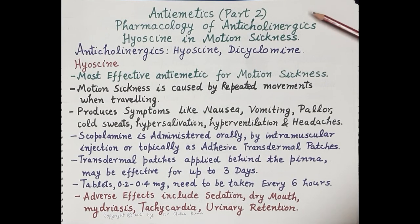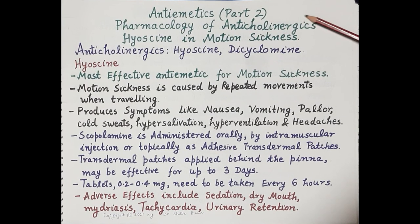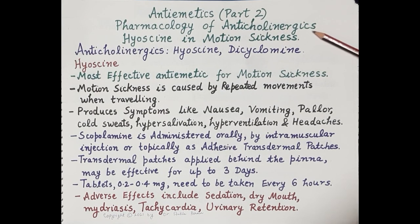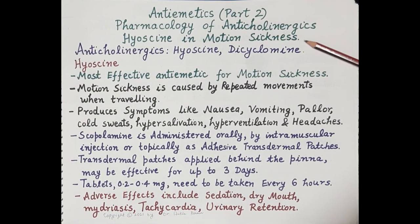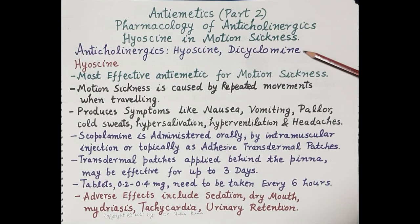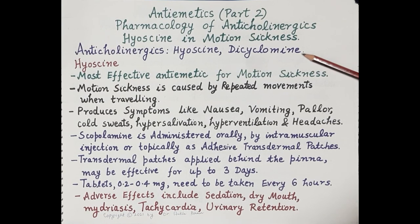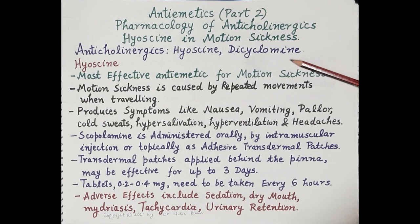Hello students. In today's video on anti-emetics part 2, we will study the pharmacology of anticholinergics with reference to the use of hyoscine, also called scopolamine, in motion sickness. Anticholinergics is a class of anti-emetics. The drugs included in this class are hyoscine, also called scopolamine, and dicyclomine.